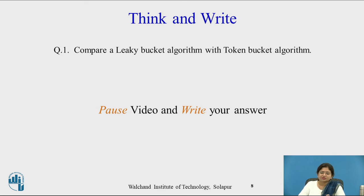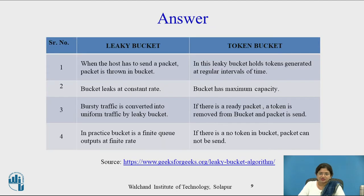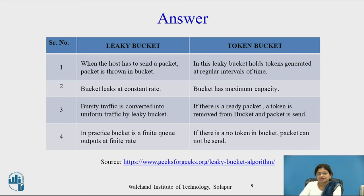Now compare the Leaky Bucket Algorithm with the Token Bucket Algorithm. In the Leaky Bucket Algorithm, when the host has to send a packet, the packet is thrown into the bucket. But in the Token Bucket, the Leaky Bucket holds tokens generated at regular intervals. In the Leaky Bucket, the bucket leaks at a constant rate, whereas in the Token Bucket, the bucket has a maximum capacity to hold tokens. In the Leaky Bucket, bursty traffic is converted into uniform traffic. In the Token Bucket, if there is a ready packet, a token is removed from the bucket and the packet is sent.